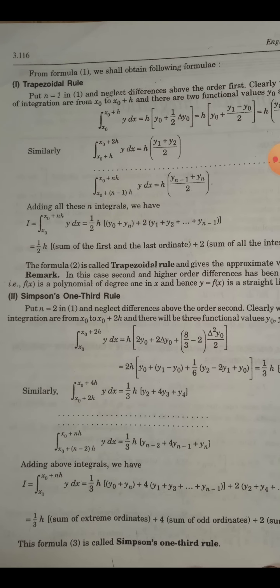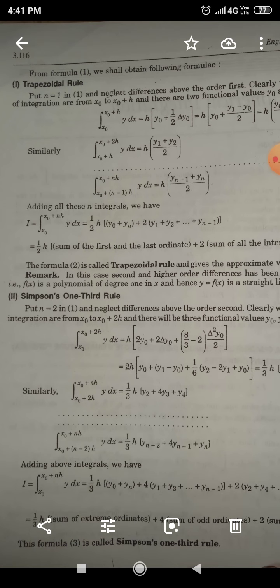Similarly, third division, fourth division, and Nth division X_0 plus N minus 1 H to X_0 plus N H, Y dX equals same or just similar term of above, H (y_n minus 1 plus y_n) upon 2.